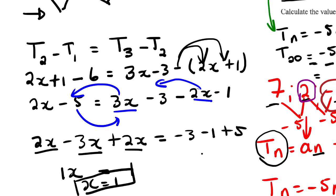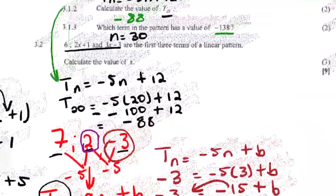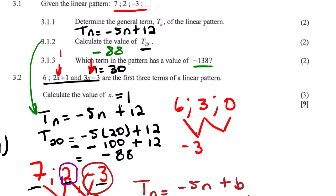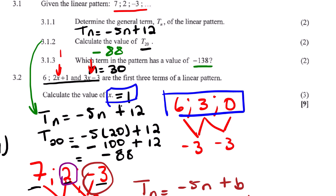The final answer is x equals 1. We can verify by substituting: t1 is 6, t2 is 2 times 1 plus 1 equals 3, and t3 is 3 times 1 minus 3 equals 0. The differences are 3 minus 6 equals negative 3, and 0 minus 3 equals negative 3 — the common difference is confirmed. So x equals 1 is correct. That's it for this lesson. This is Fahula SJ, thank you very much.